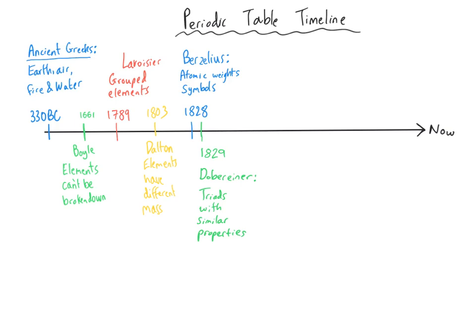Not long after Berzelius came a German scientist called Johann Wolfgang Döbereiner, who looked at grouping elements into threes — which he called triads — where each element had similar chemical properties. After that, the evolution of the periodic table became more organised and collaborative. In 1860 there was a big conference in Germany where the atomic weights of the 60 known elements were drawn up more accurately. Not long after, Lothar Meyer noted that if you arrange elements in order of atomic weight, they fall into groups of similar chemical and physical properties repeated at periodic intervals.